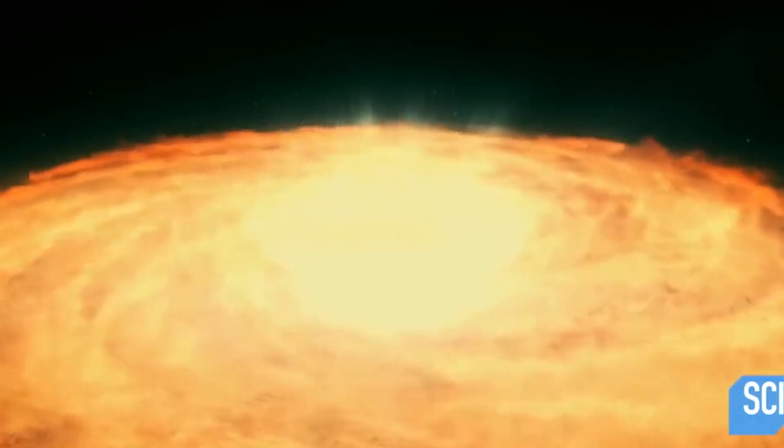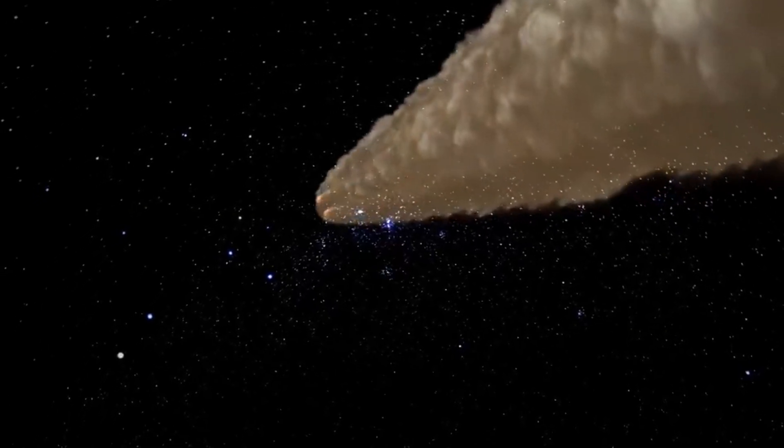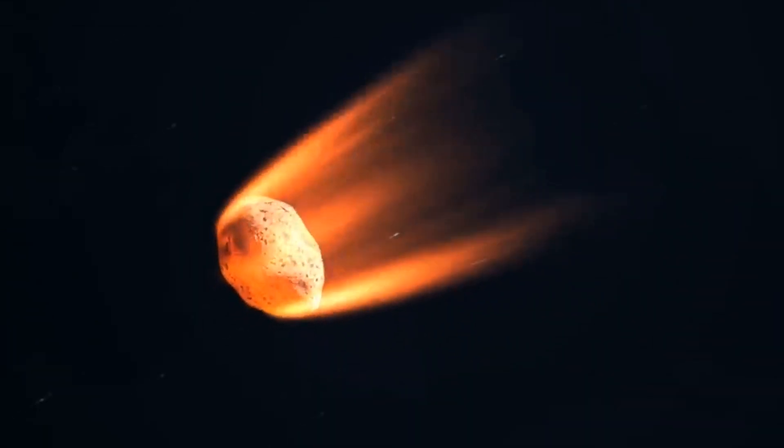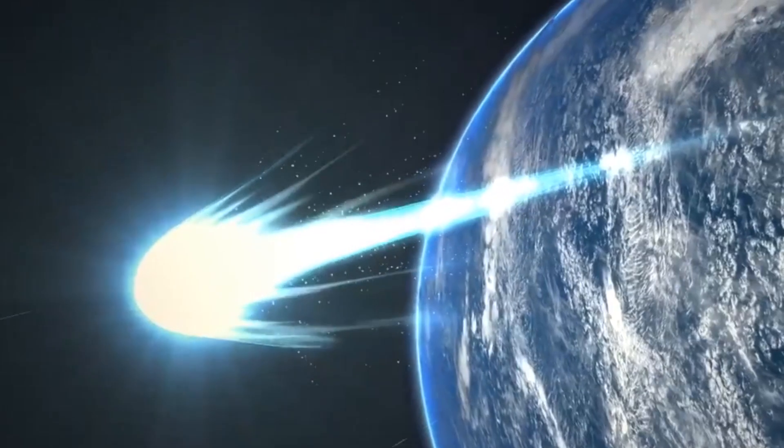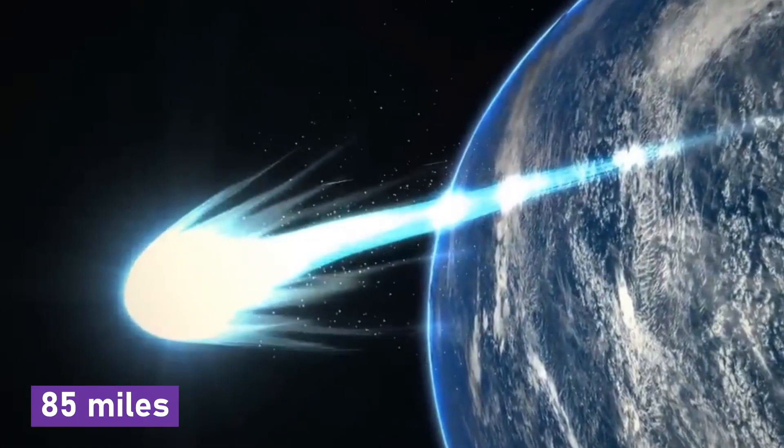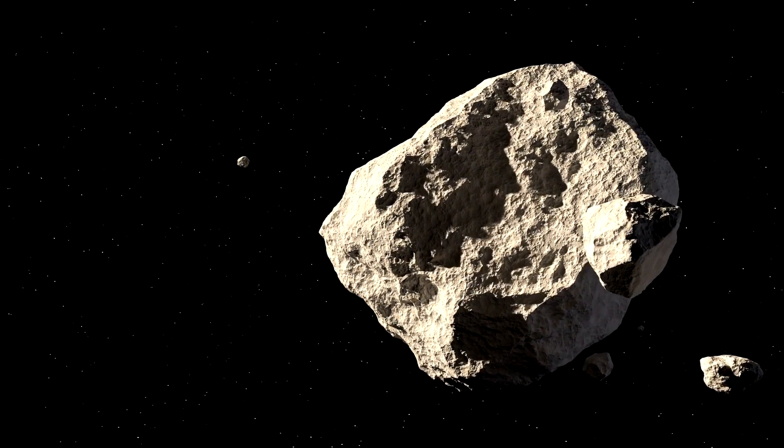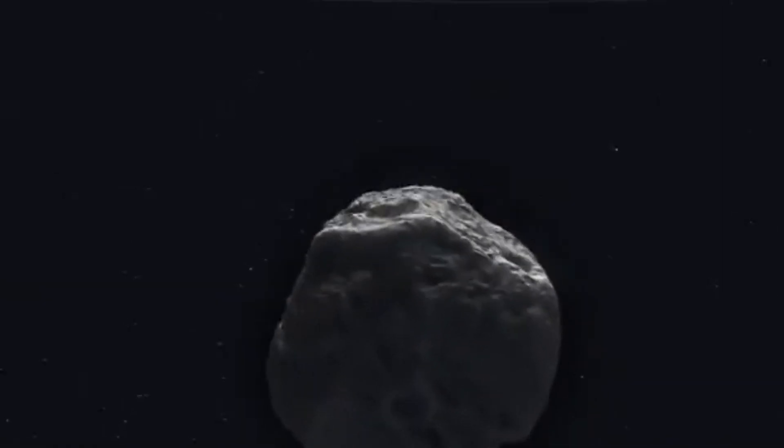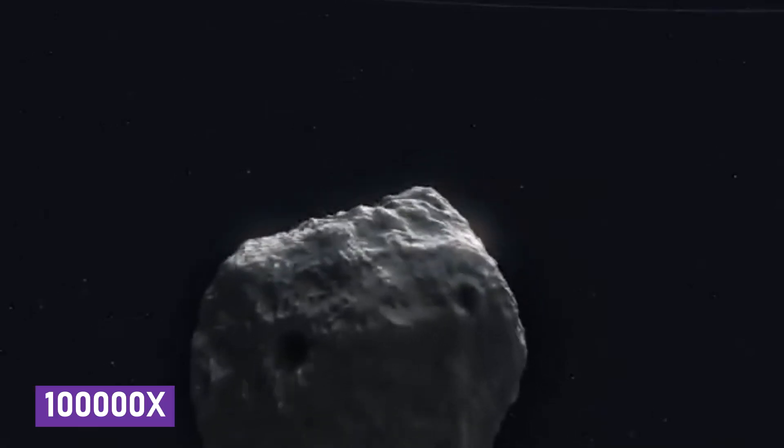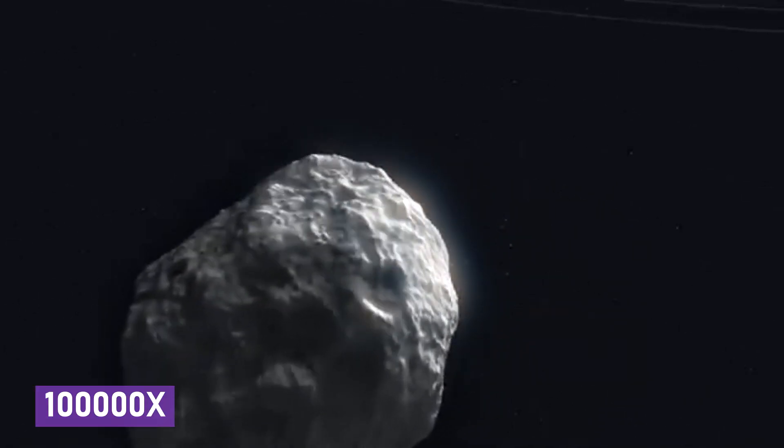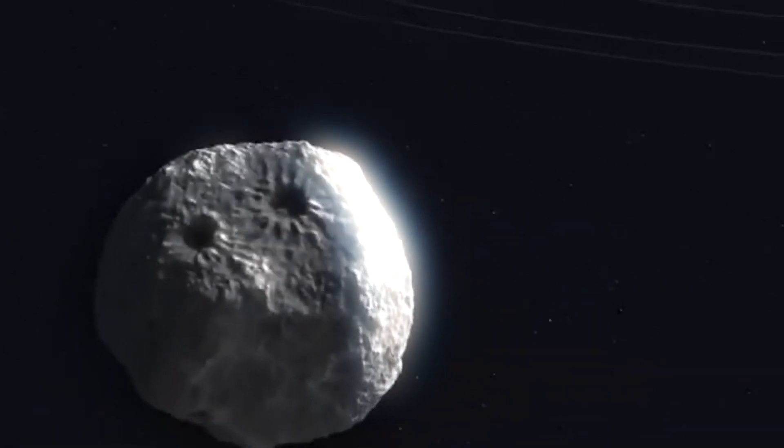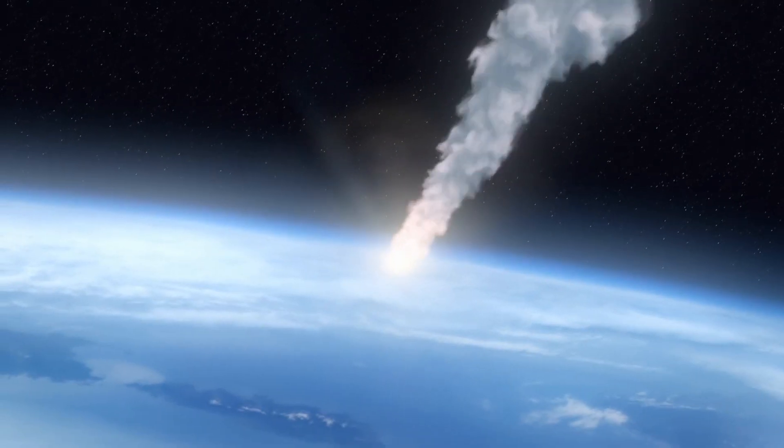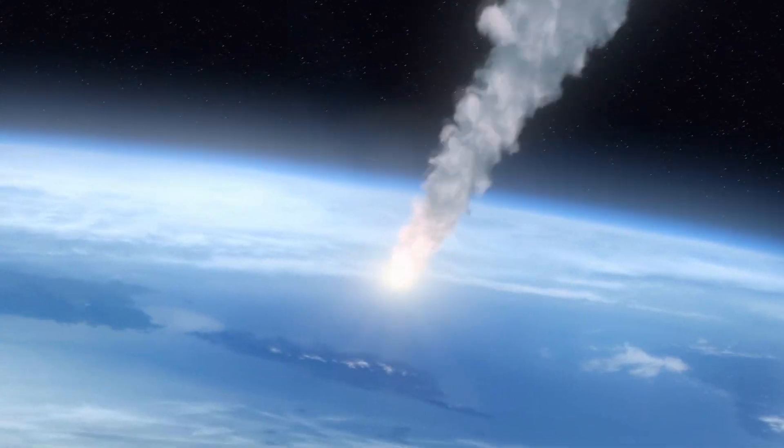The comet that broke the record for the largest nucleus ever discovered in a comet arrived in our solar system in 2021. It had a diameter of 85 miles, and its frozen nucleus was 50 times larger than the previous record holder. Its mass was an astounding 100,000 times more than that of a typical comet. Scientists at first thought it should be considered a minor planet.